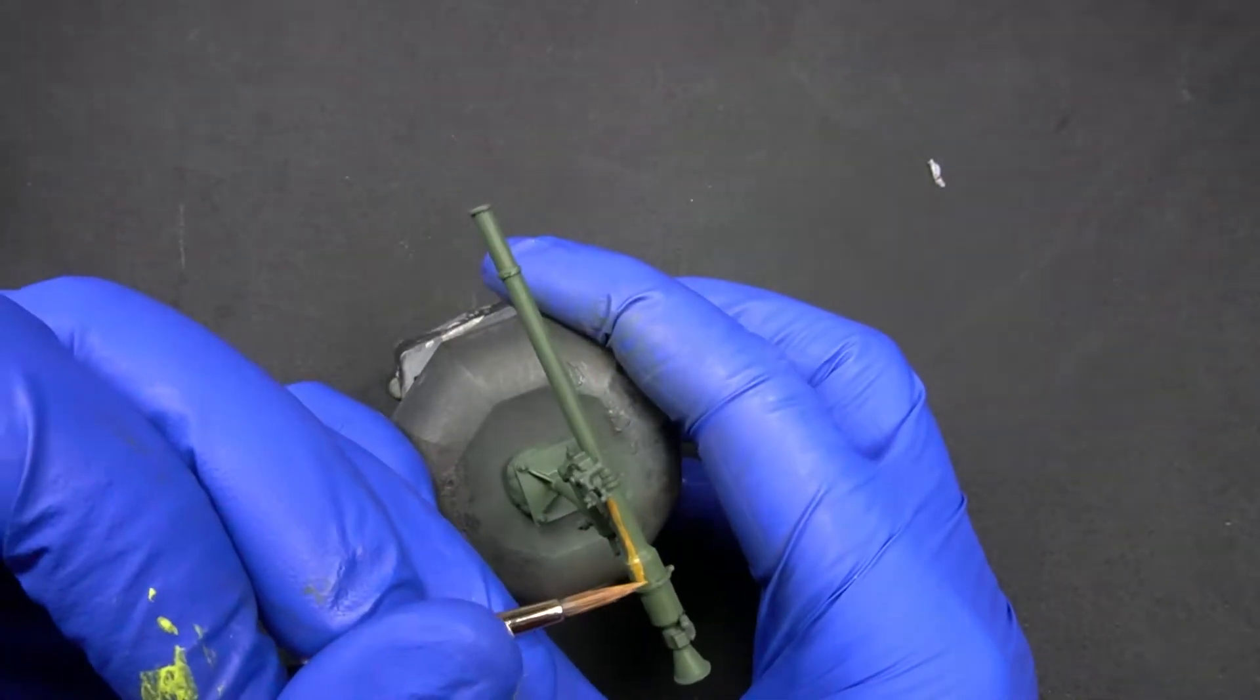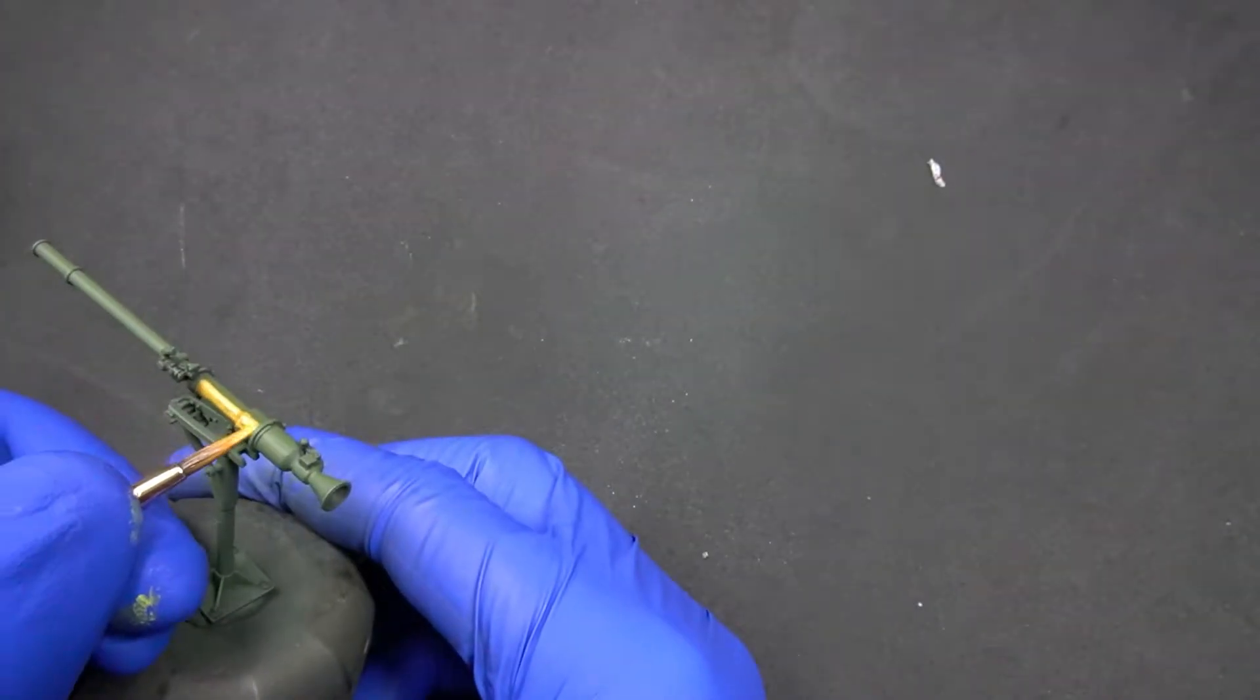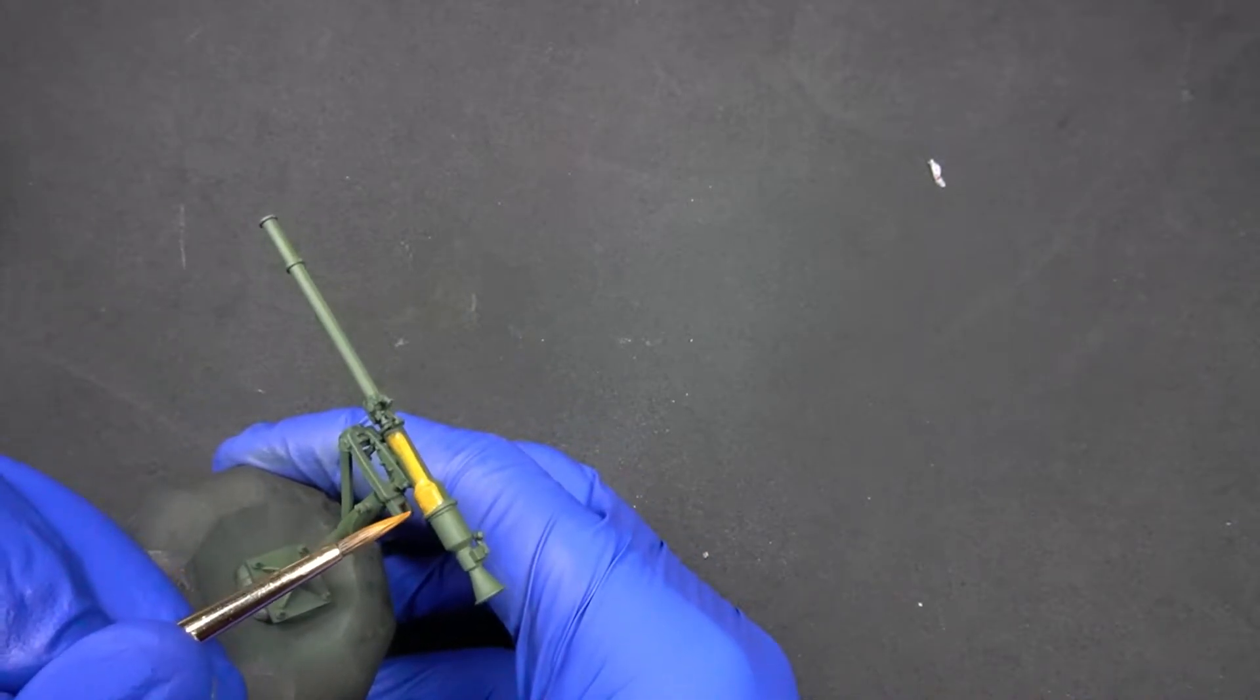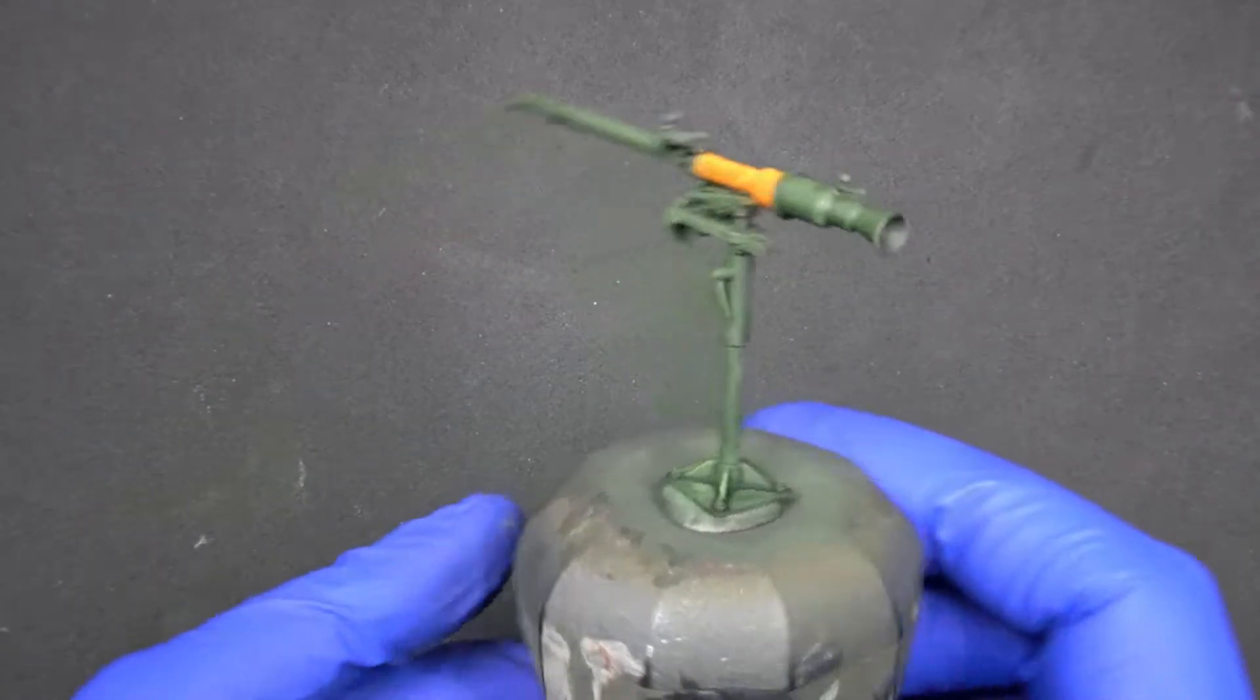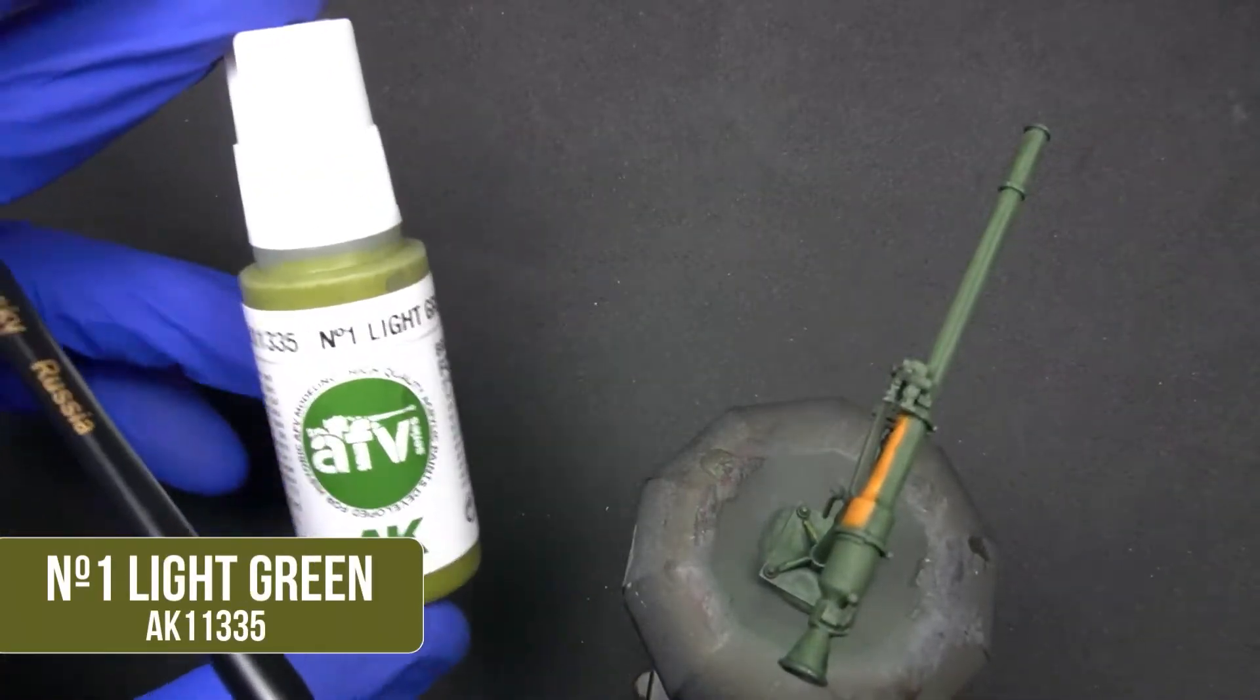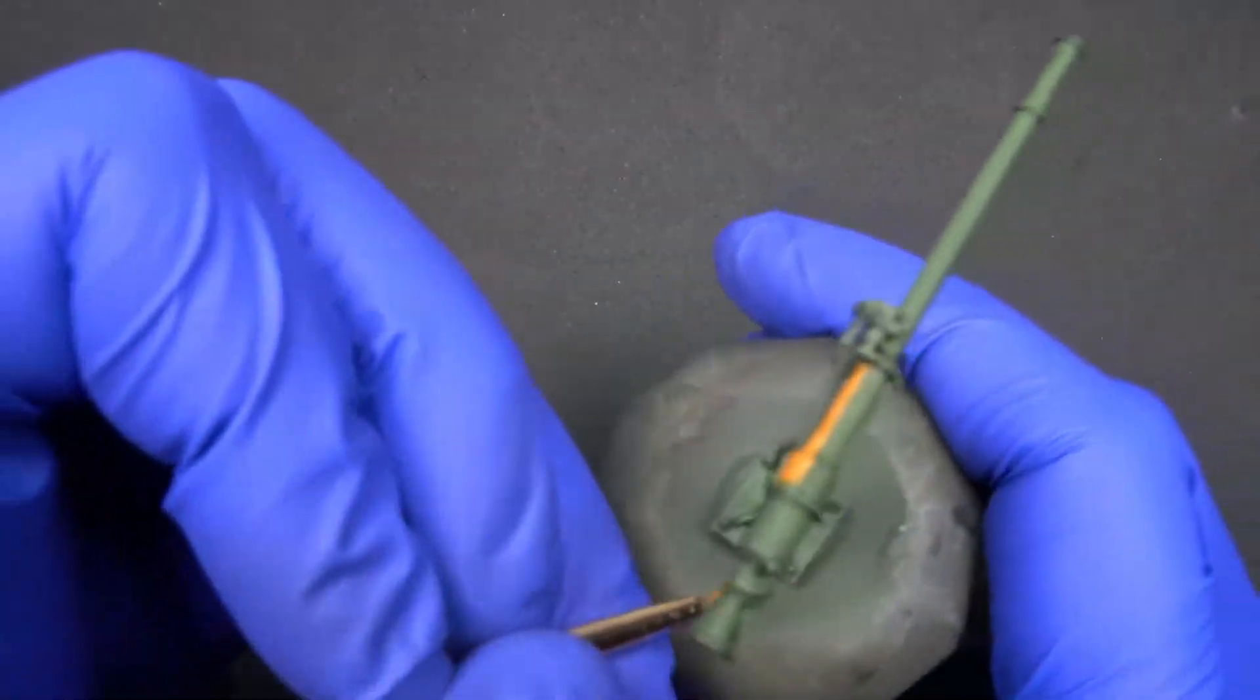We suppose that this different colored area is some kind of thermal protection for the gunner. This should help prevent him from getting burned when aiming. Finally, with light green, we can apply some final lights in the areas that we want to stand out more. After this step, the basic paint of our gun would be finished, but it would be strange for the car to be completely damaged and the gun to be brand new.